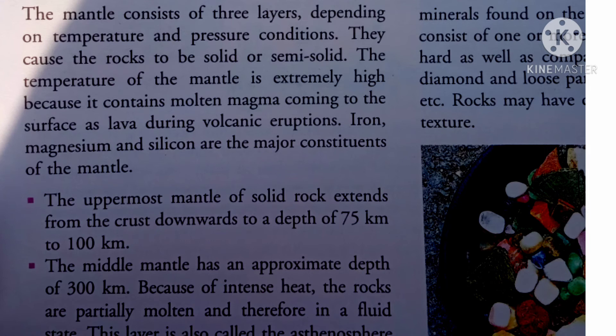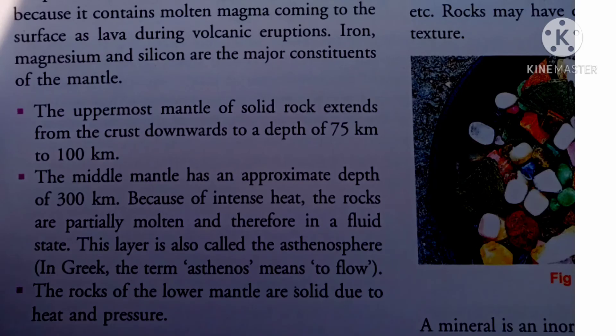This layer is also called the asthenosphere. In Greek, the term 'asthenos' means 'to flow.' The rocks of the lower mantle are solid due to high heat and pressure.